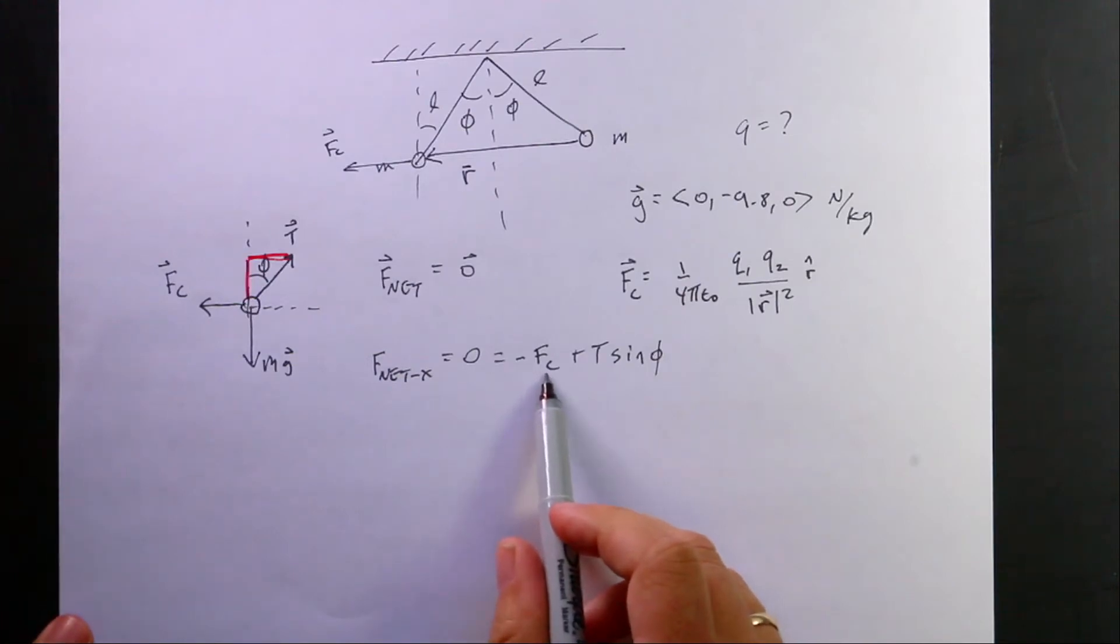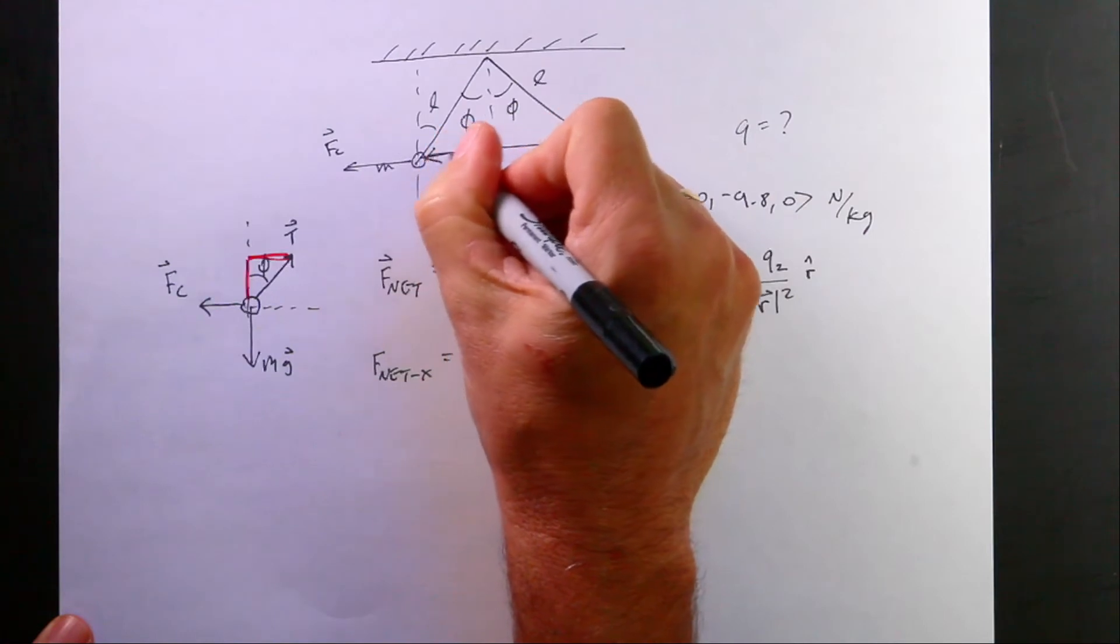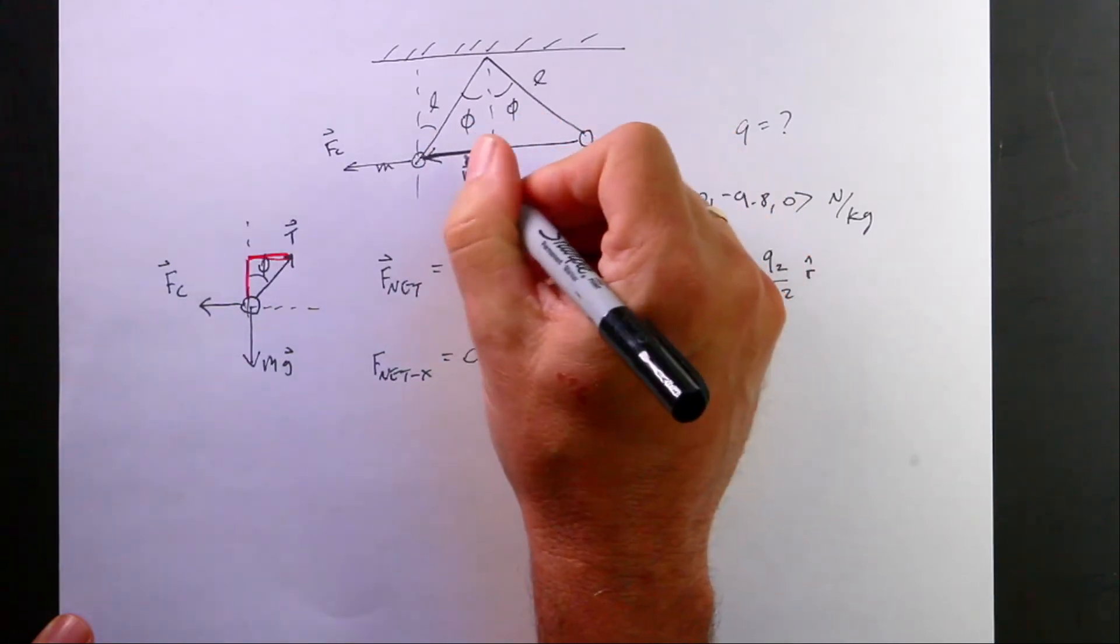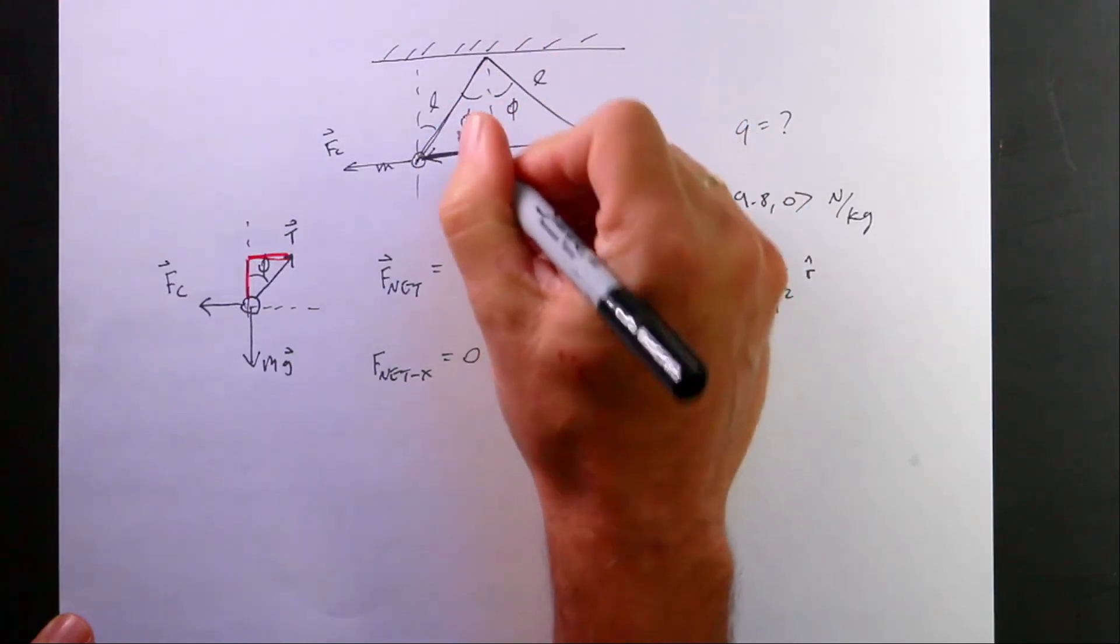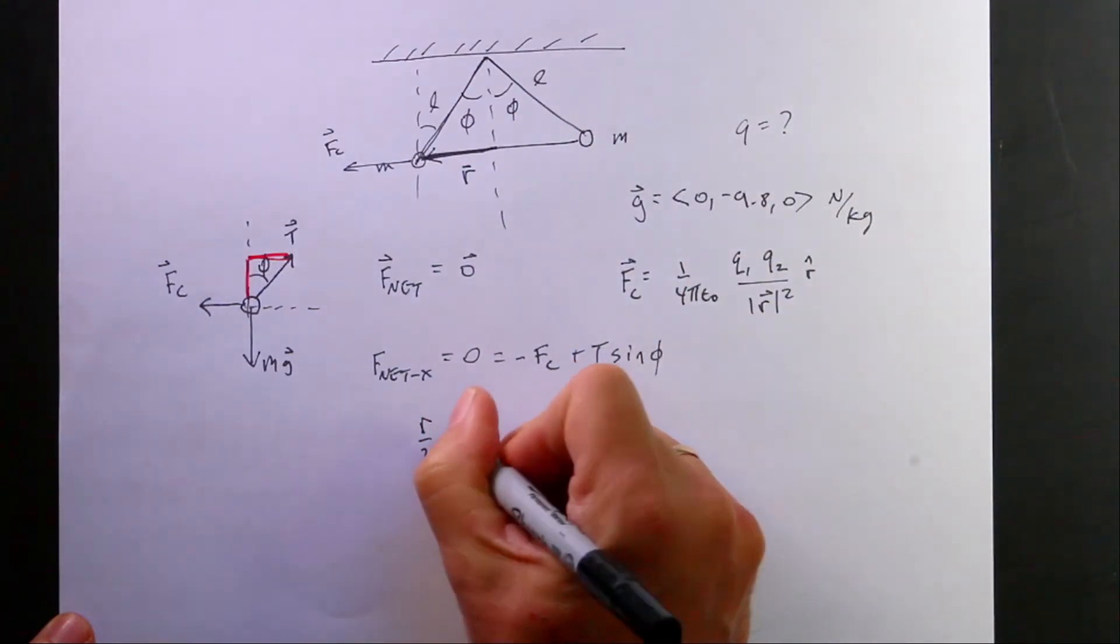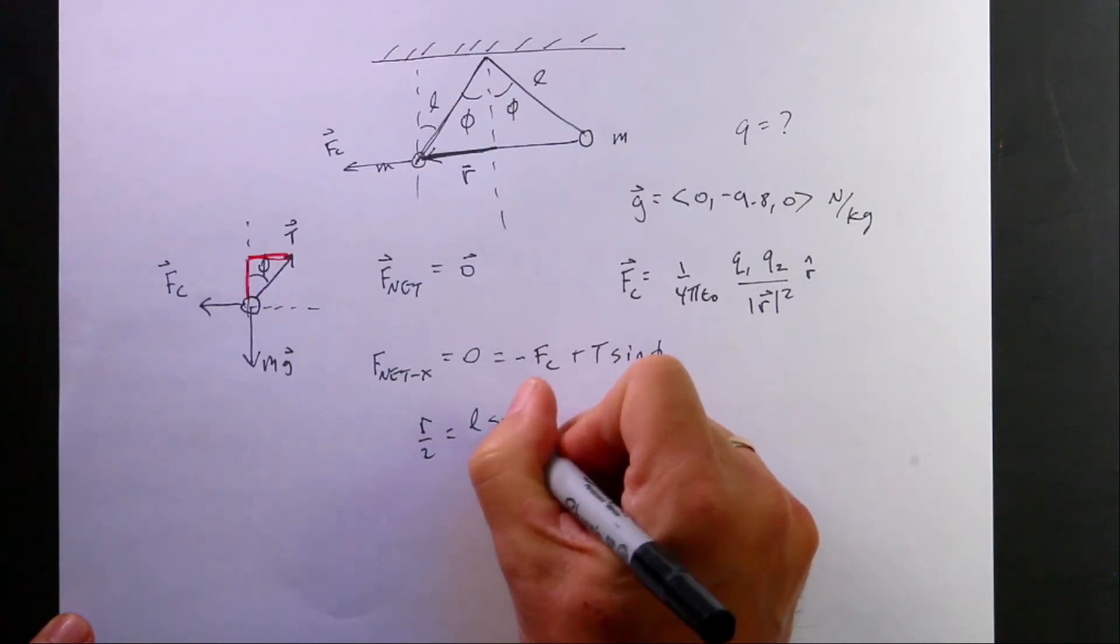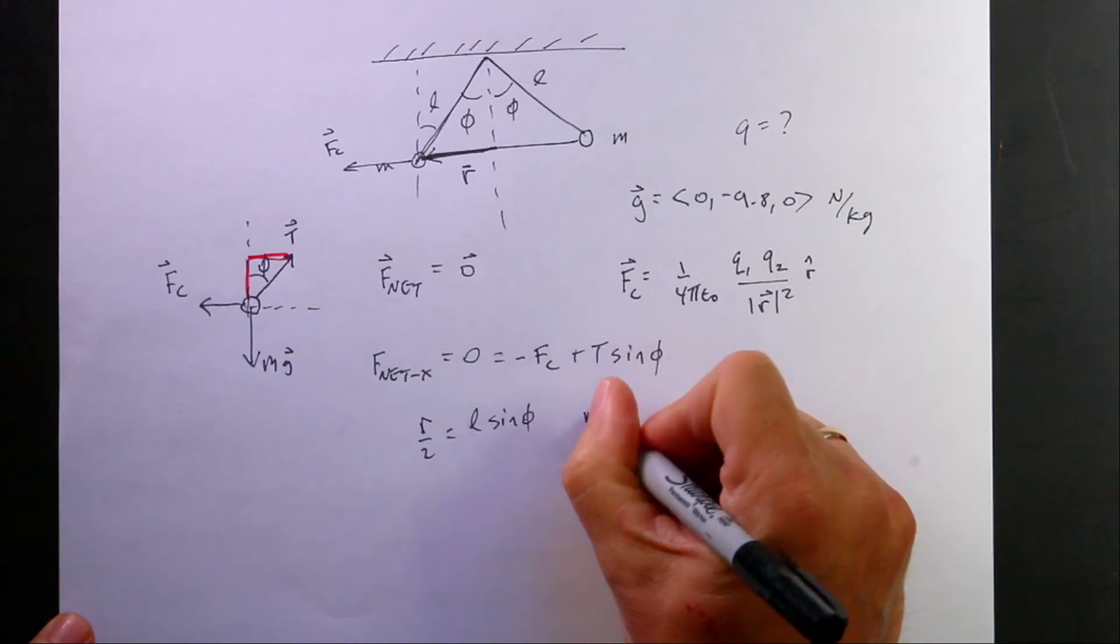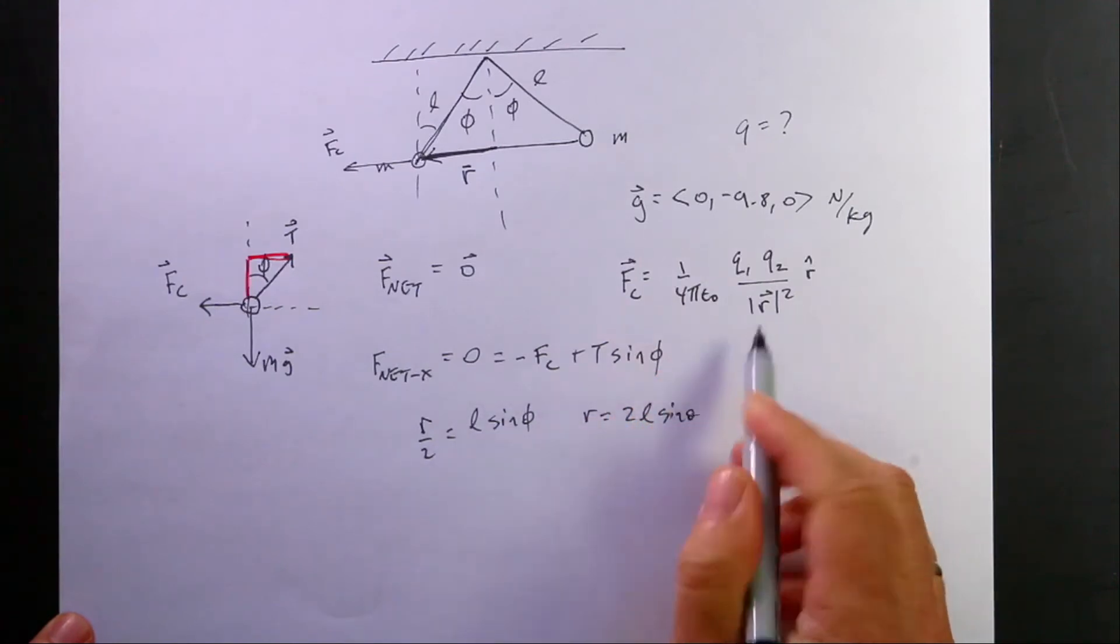Okay, now let's go ahead and put in an expression for FC. I actually can find this distance, right? That distance right there is going to be, this is the length L, so this is R over 2. So I can say R over 2 equals L sine of phi. So R, the distance between them, is going to be 2L sine phi. So I can put that in up here.